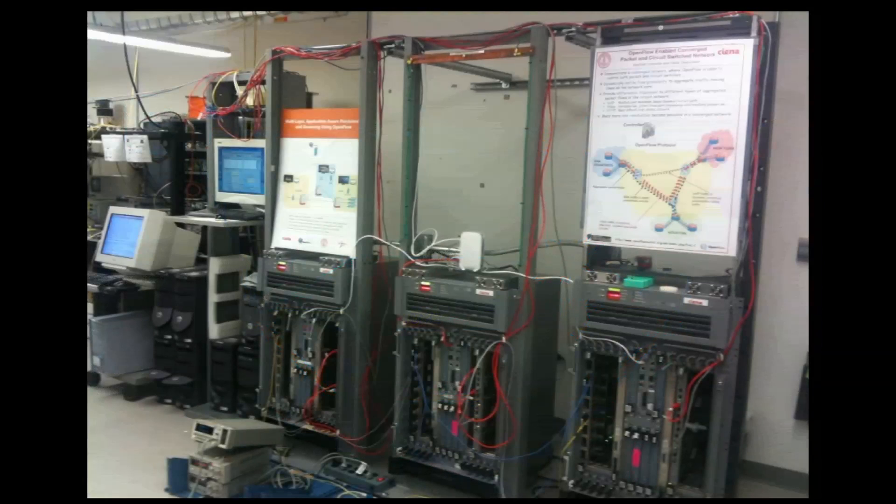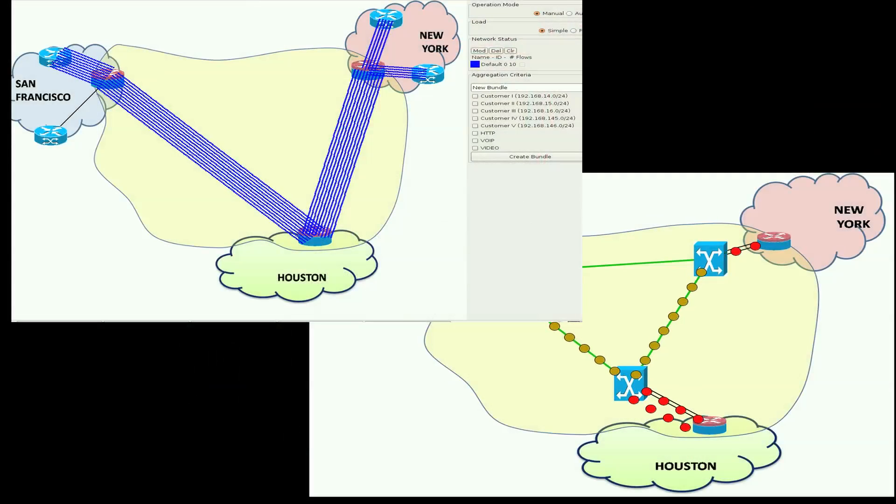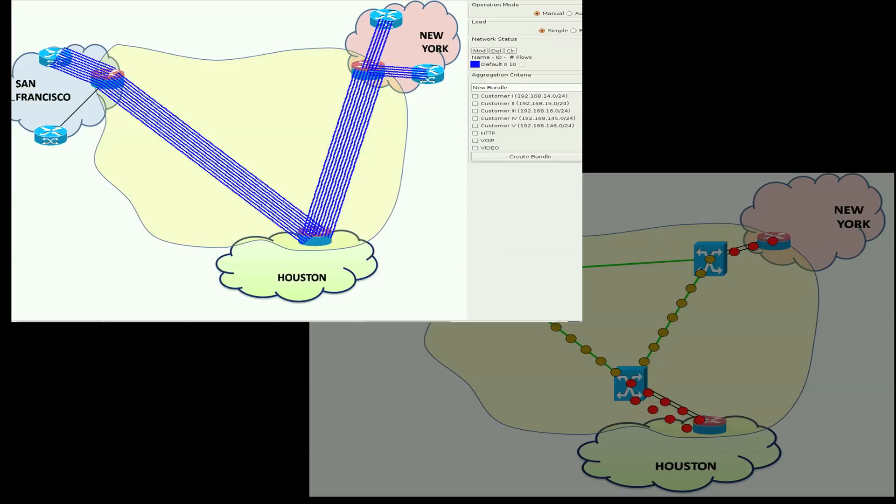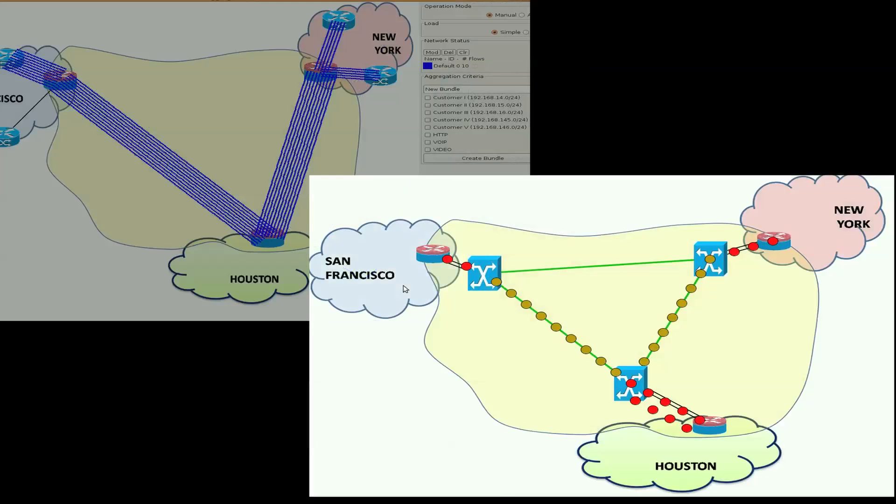To demonstrate our ideas, we have built a system in our lab that emulates a wide area PACSI network. Here we see two GUIs. One which shows the packet topology, comprising of access and backbone routers in three cities, and the other that shows the circuit topology, comprising of circuit switches and fiber links interconnecting the backbone routers over the wide area.